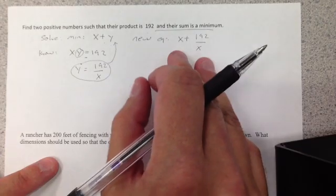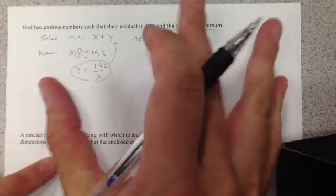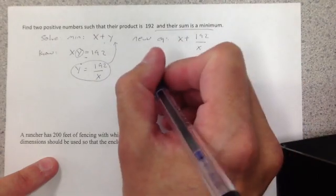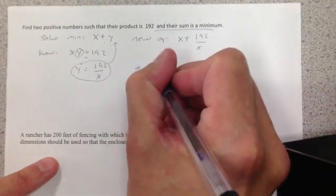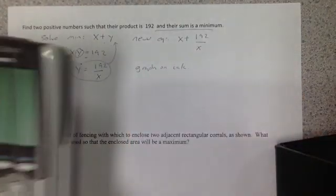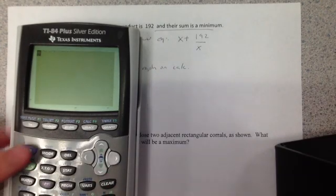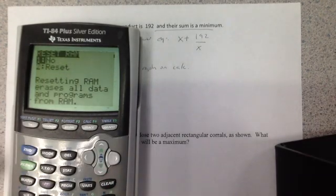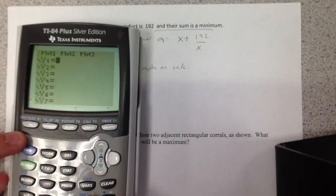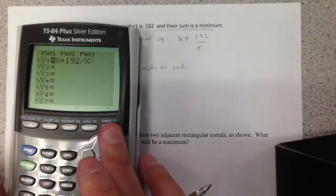Once you get to this point, to solve this by hand, we need calculus. We're going to talk about this later on. But to solve it with algebra 2, all you're going to do is just graph it on the calculator. I'm going to take my calculator, an 84. You'll be able to use an 84 for the test. Clear out everything, second plus 7-1-2, reset it, go to y equals. I just type in my equation: x plus 192 divided by x. And I'm going to graph it.